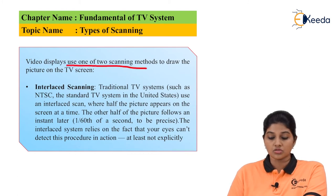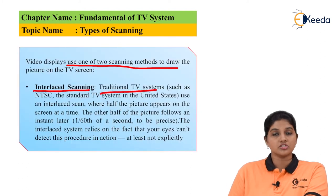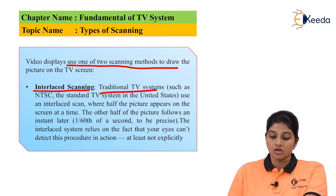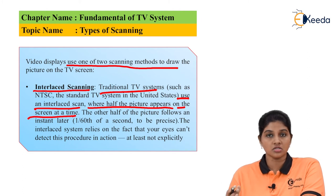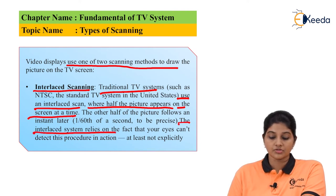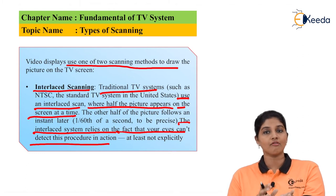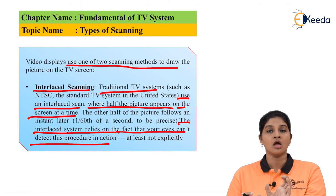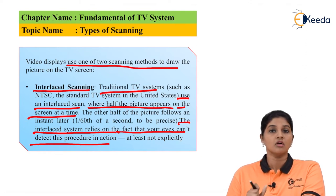Video displays use one of two methods of scanning: interlaced scanning and progressive scanning. The traditional television system such as NTSC, developed in America, uses interlaced scanning, in which one half of the picture appears on the screen at a time, and the other half appears after 1/60th of a second. The interlaced system relies on the fact that the human eye cannot detect this procedure in action — first half of the screen is scanned, then the remaining half appears, as the human eye cannot detect such fast changes.